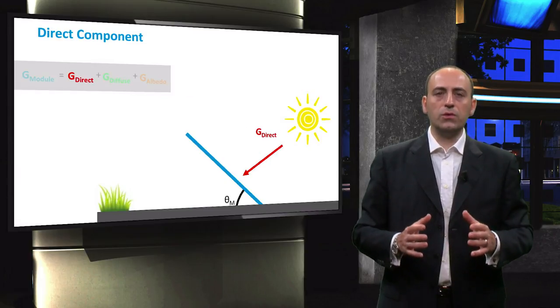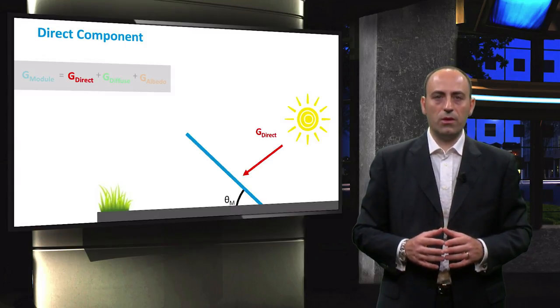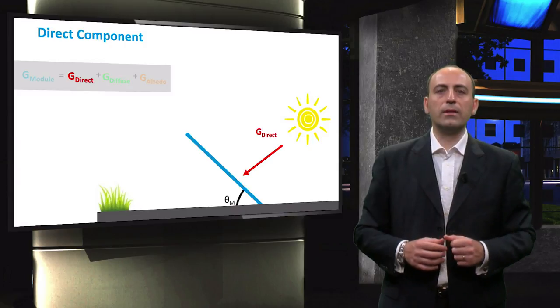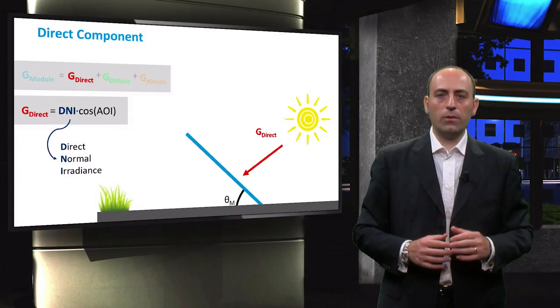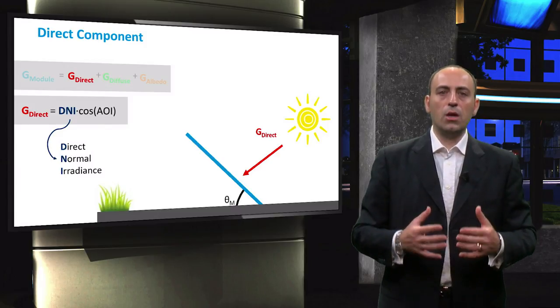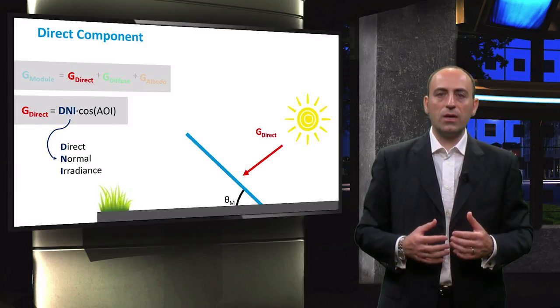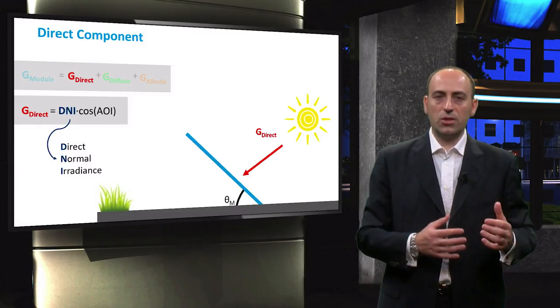Now we have all the tools to divide the incident radiance into the three components we introduced earlier. The direct component can be calculated using the following equation. We can notice that the direct irradiance component is proportional to the direct normal irradiance, or DNI, times the cosine of the angle of incidence, which we have just derived.